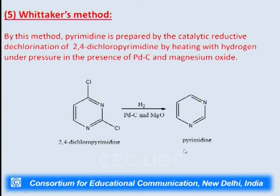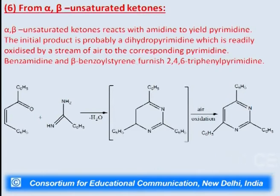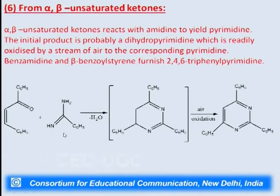Pyrimidine can also be prepared from alpha-beta unsaturated ketones. These react with amidine to yield pyrimidine; the initial product is probably a dihydropyrimidine which is readily oxidized by a stream of air to the corresponding pyrimidine. For the alpha-beta unsaturated ketone we have taken beta-benzoylstyrene, which reacts with benzamidine and condenses together. Losing a molecule of water, it first gives a substituted dihydropyrimidine which on oxidation with air will give us triphenylpyrimidine.